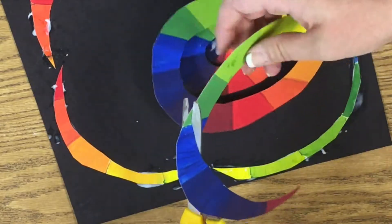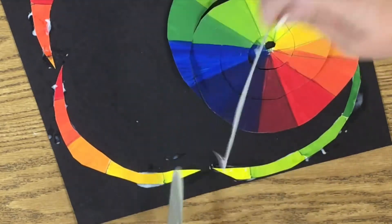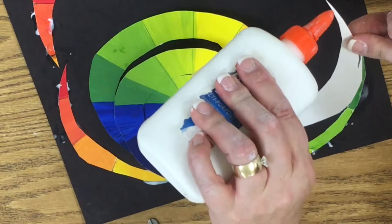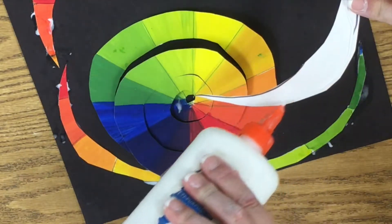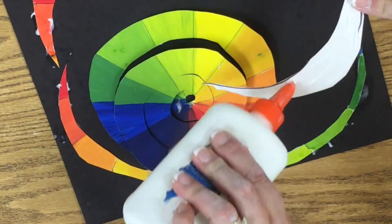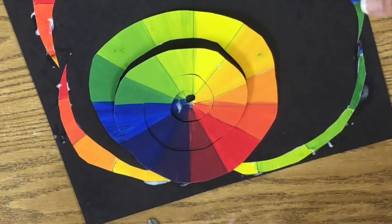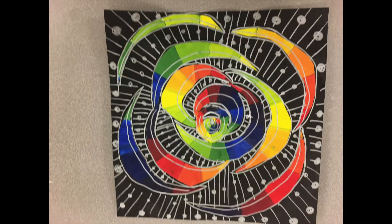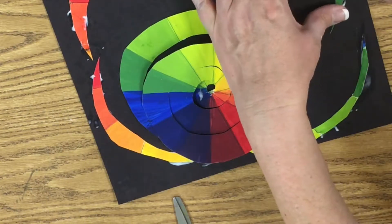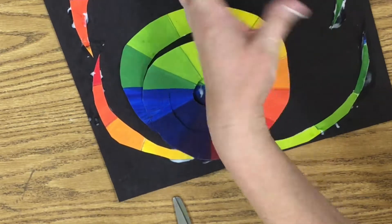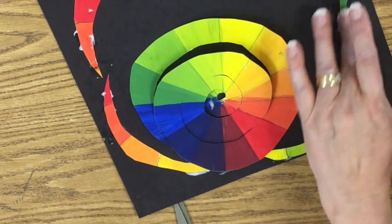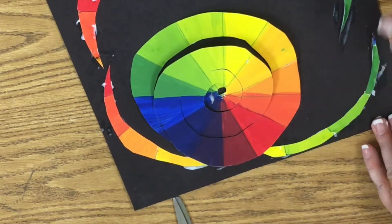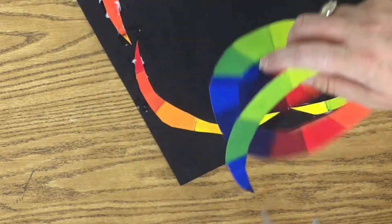Now, why wouldn't I want to just cut all these at once? Well, because I'll probably lose them and that will be frustrating. So it's easier to cut and then glue than to cut all of them and lose a bunch of them. Okay, there we go. Cut my next one.